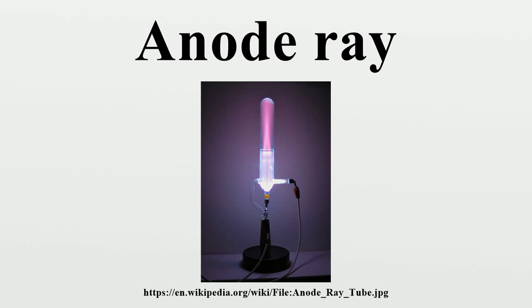The process by which anode rays are formed in a gas discharge anode ray tube is as follows. When the high voltage is applied to the tube, its electric field accelerates the small number of ions always present in the gas, created by natural processes such as radioactivity. These collide with atoms of the gas.